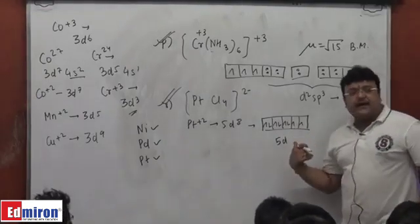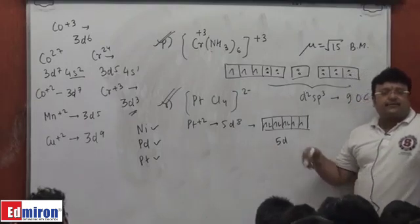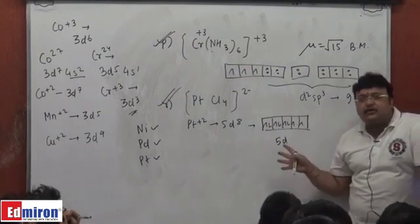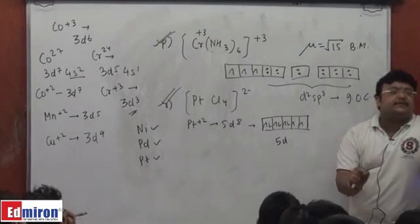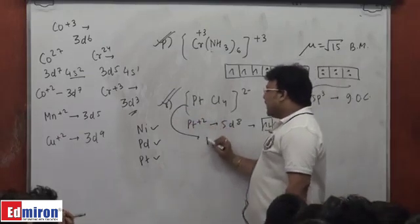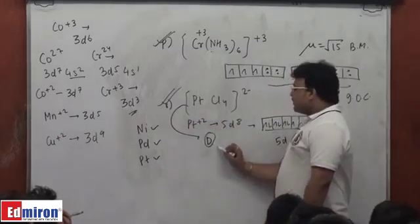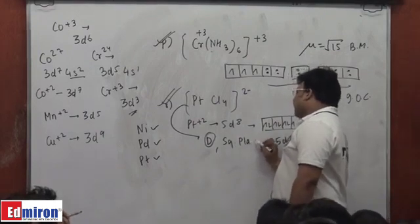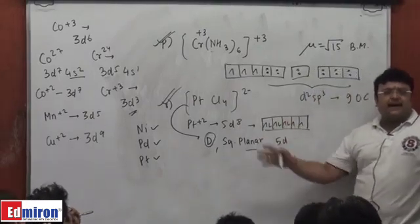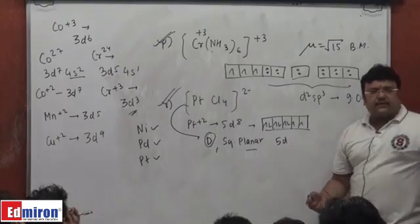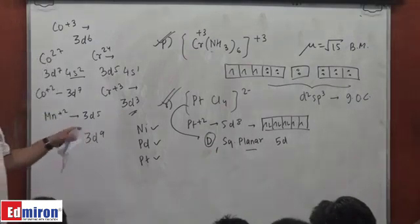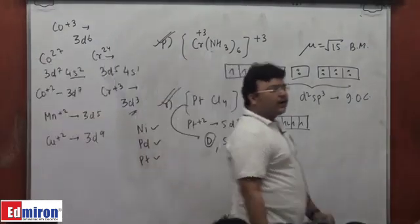I would expect chlorine to be a weak field ligand again — throughout I have been finding chlorine a weak field ligand. I would expect it to take up sp3 orbitals, effect sp3 hybridization, and form a tetrahedral geometry which is paramagnetic. Contrary to all these expectations, you will find PtCl4 2 minus to be diamagnetic, with no unpaired electrons, and square planar. The only way to explain this is if you are forced to take chlorine as a strong field ligand here.